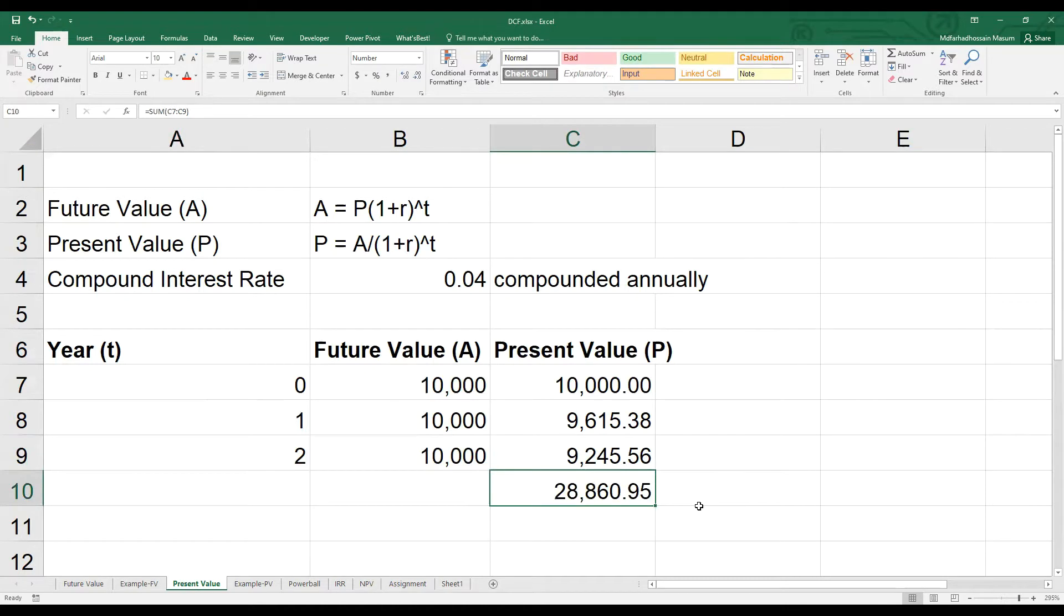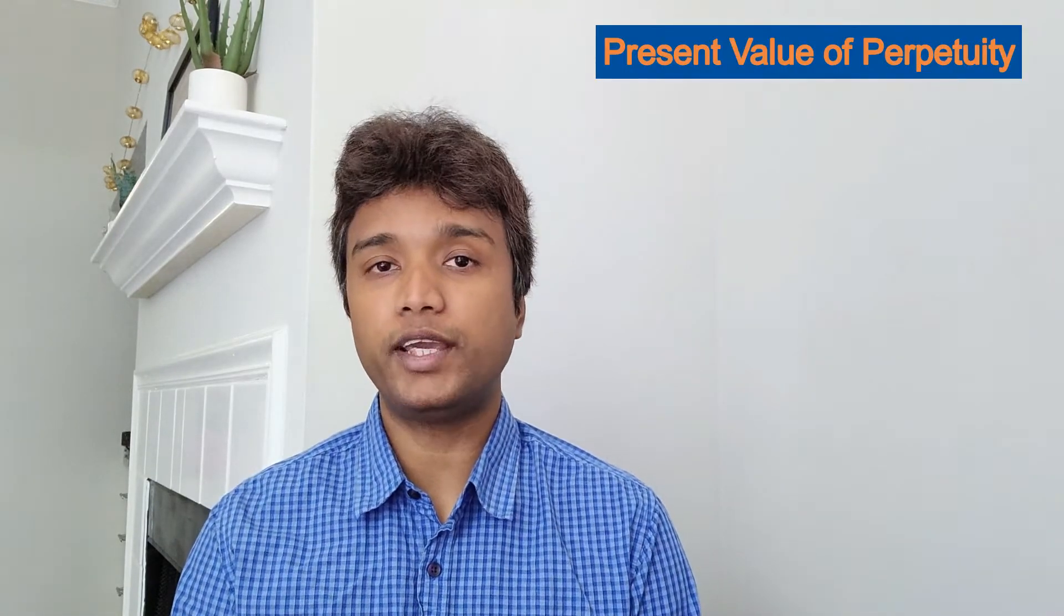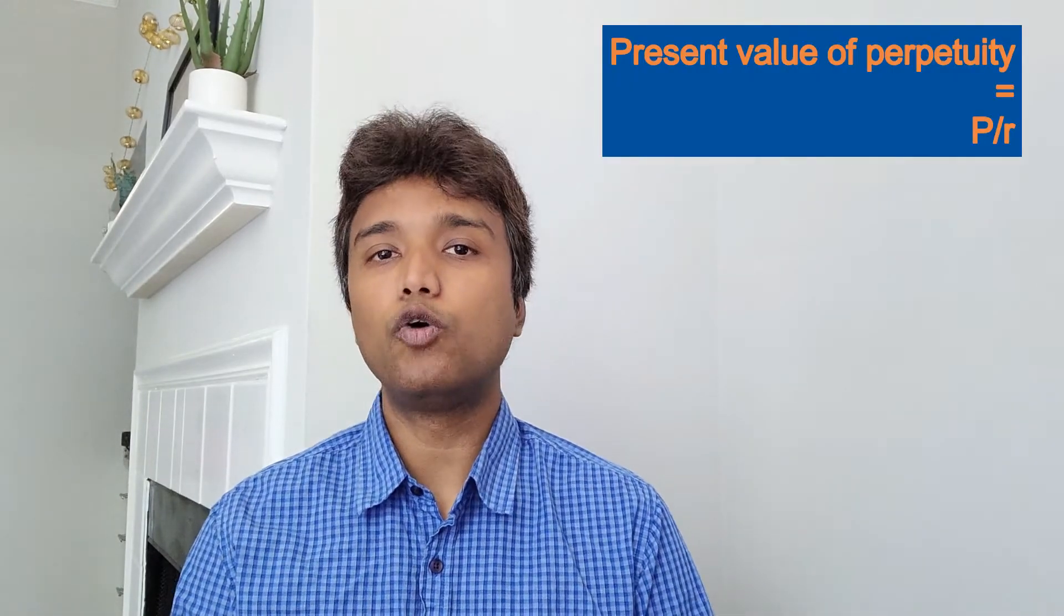A process to determine present value of payment or a stream of payments. This is the basis of discounted cash flow analysis. This interest thing is really interesting. $10,000 every year for the rest of your life at 4% interest rate is just $250,000 today. This is called the present value of perpetuity or perpetual annuity. And you can calculate that by principle P over interest rate R. A very simple formula.